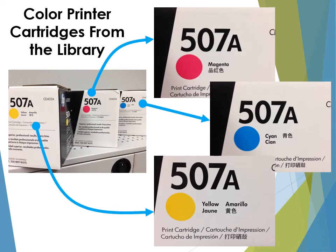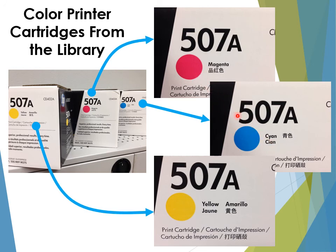Here are three ink cartridges: yellow, magenta, and cyan. All the colors that can be printed come from these three. For example, to get red: magenta absorbs green and reflects red and blue, yellow absorbs blue and reflects red and green, but magenta absorbs the green — so both reflect red, giving you red when mixed. Similarly, yellow and cyan mixed give green, and cyan and magenta mixed give blue. This is how you get your secondary colors from the three primary pigment ink cartridges.